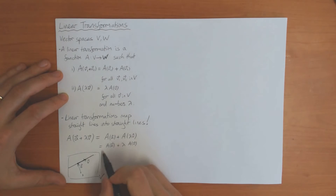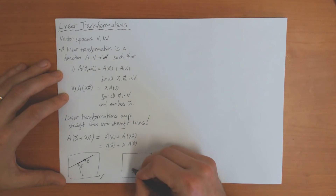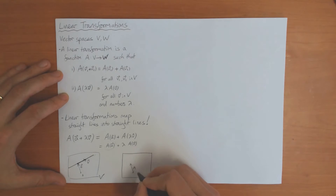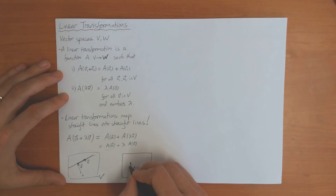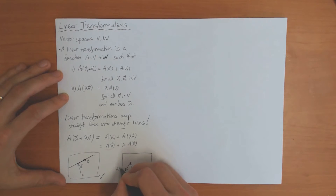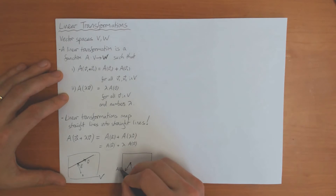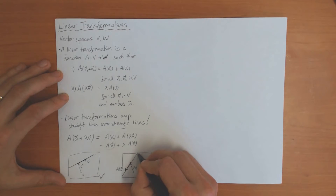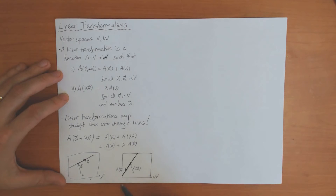You can see that this is the equation of a straight line in W: starting at vector A(A) and going a multiple lambda along the direction A(V). So the equation of a straight line in V is mapped to the equation of a straight line in W. This is what linear means — a map which preserves straight lines.